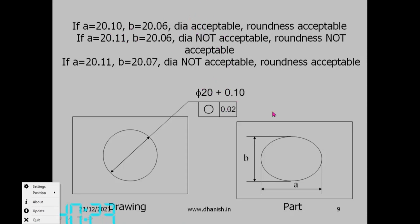What will be the roundness error in this case? The diameter difference is 0.04, so along the radius the separation will be 0.02. The roundness error is 0.02, which is within the allowed roundness of 0.02 — so the roundness is also acceptable.